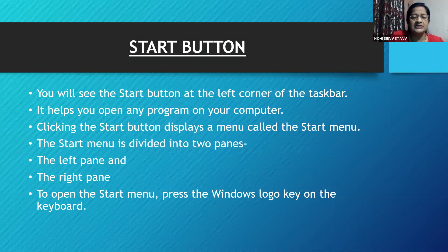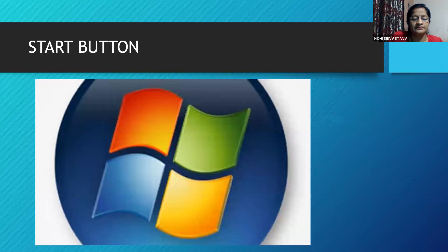You will see the Start button at the left corner of the taskbar. It helps you open any program on your computer. Clicking the Start button displays a menu called the Start menu. The Start menu is divided into two panes: the left pane and the right pane. To open the Start menu, press the Windows logo key on the keyboard.